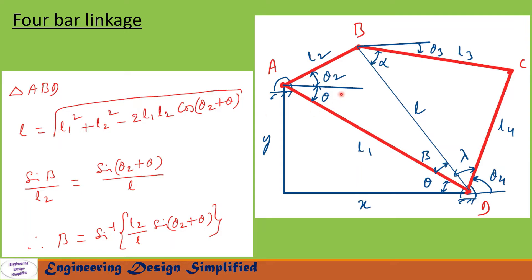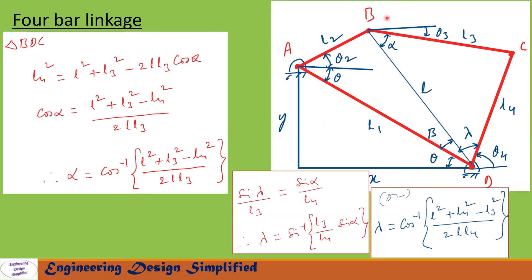Now let us apply the sine rule to find angle beta from the same triangle ABD. The sine rule gives: sin(beta)/l2 = sin(theta2 + theta)/l, so beta equals sin inverse of (l2/l)·sin(theta2 + theta). Using this formula we can find angle beta for any given angle theta2.